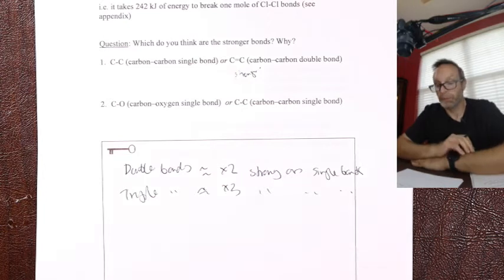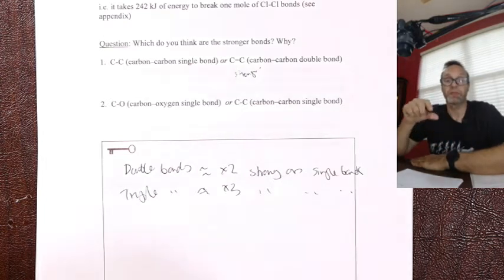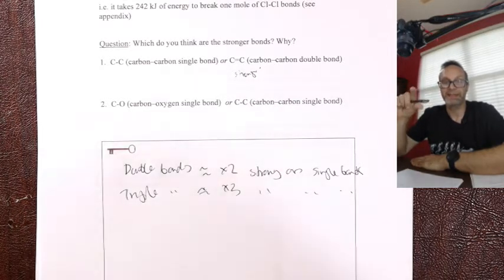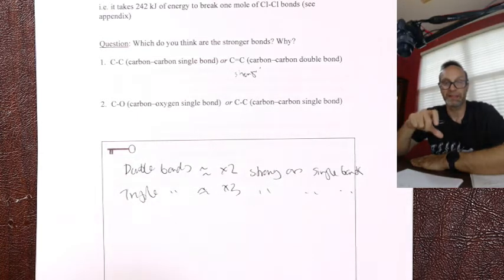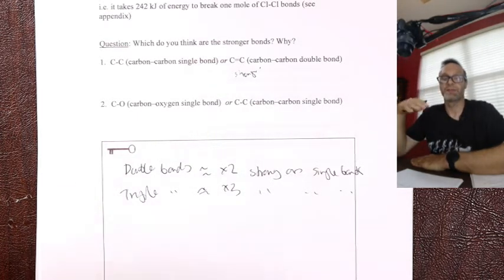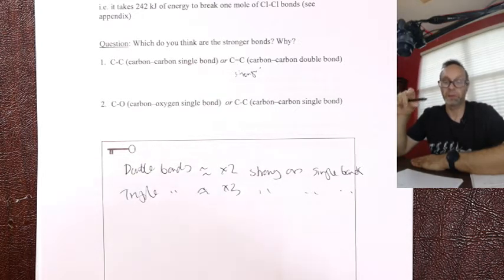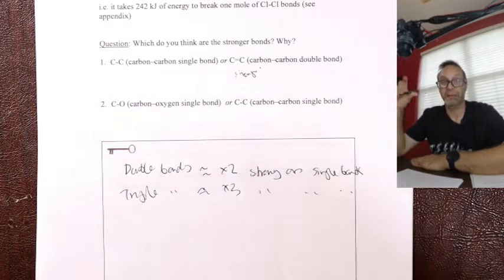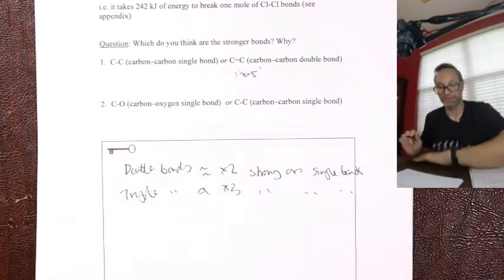So the bond order is super important. That's your first league table. Triples will beat any double, and any double will always beat a single. But within those three leagues - the triple, double, and single bond leagues - there are variations. The weakest triple bond will always be stronger than the strongest double bond. Think about three separate leagues.